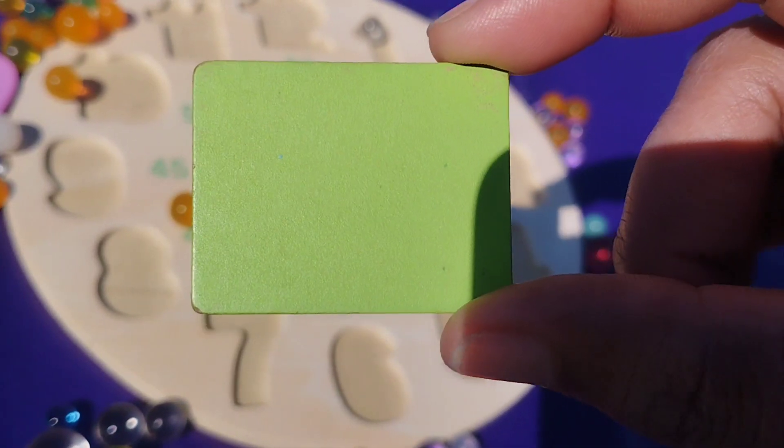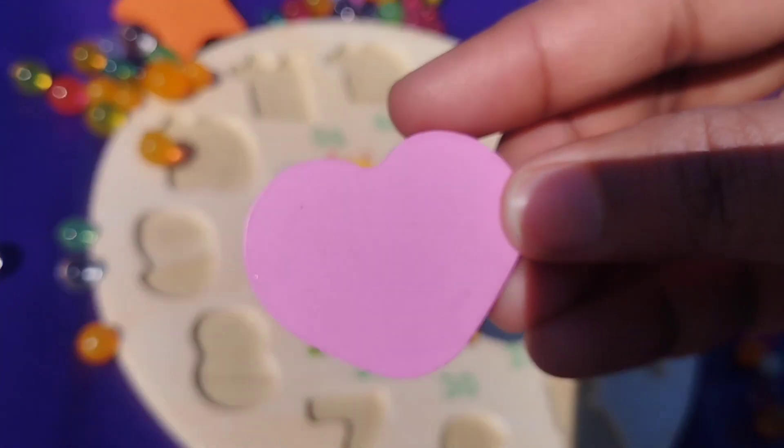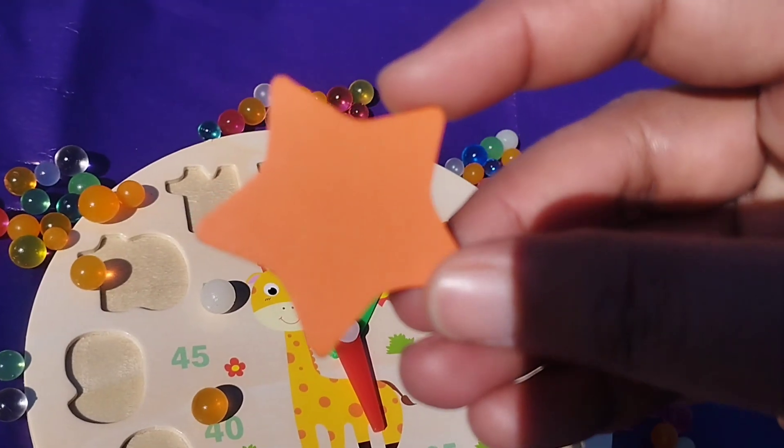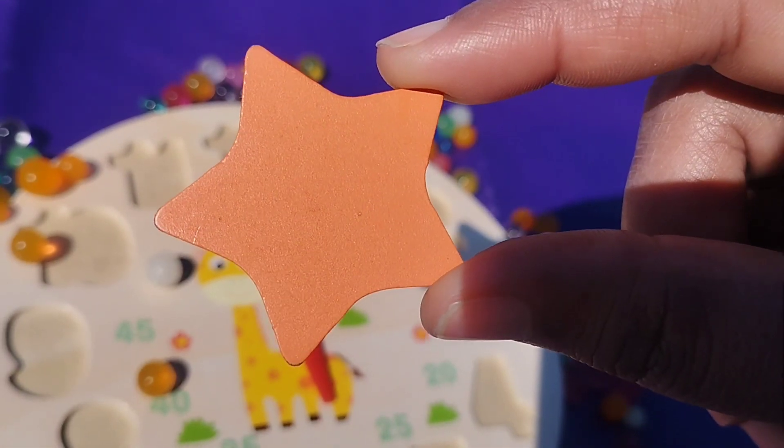Rectangle shape. The next shape is heart. This is heart shape. Star. This is star shape. See you.